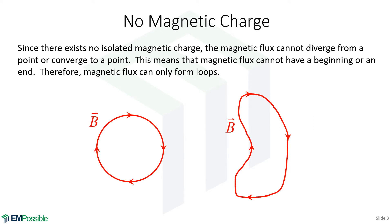There is no such thing as a magnetic charge. And we saw for electric fields, the electric field started and ended on the charges. Well, if there's no such thing as magnetic charge, then magnetic fields can't have a beginning or an end, yet they exist. So how can that be?